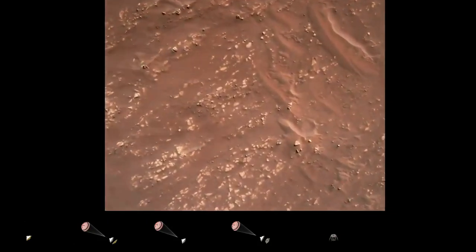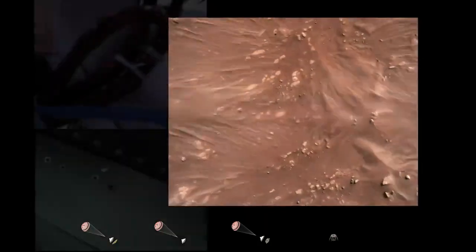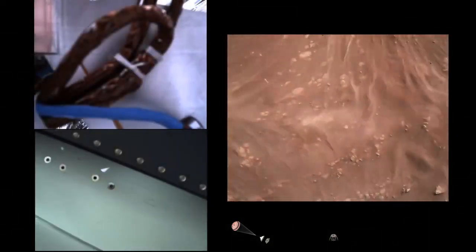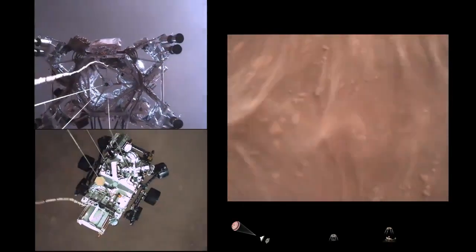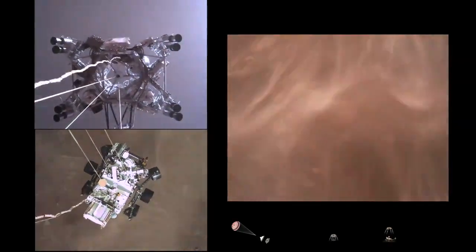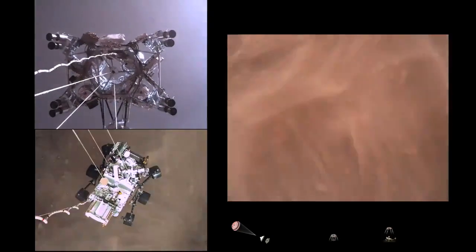We have started our constant velocity accordion, which means we are conducting the sky crane, about to conduct the sky crane maneuver. Sky crane maneuver has started. About 20 meters off the surface.